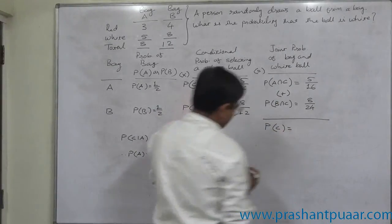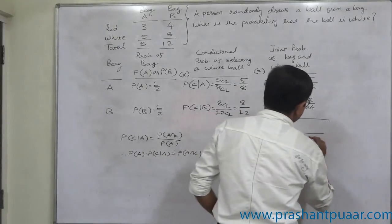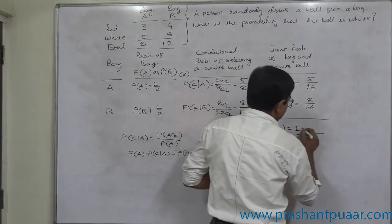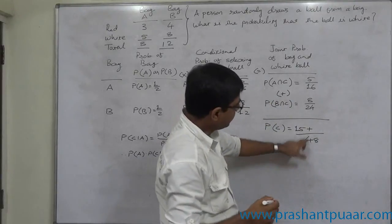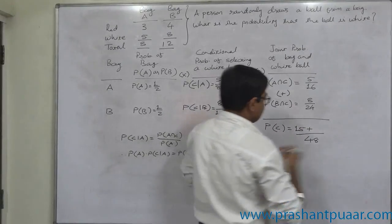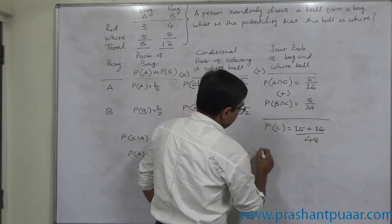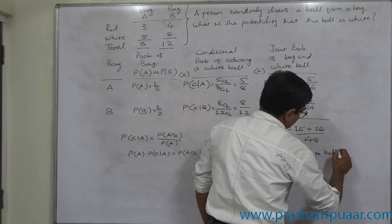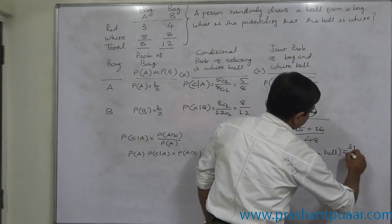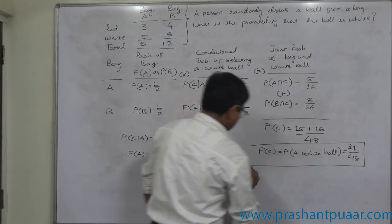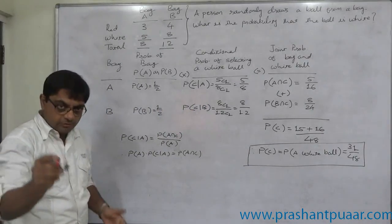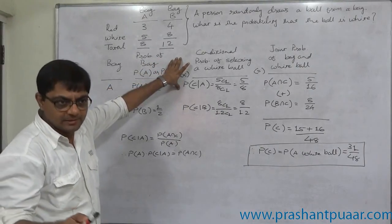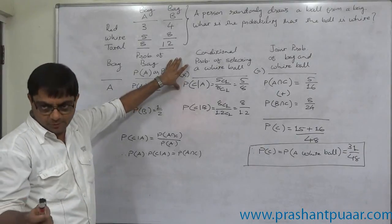P(C) equals 5 by 16 plus 8 by 24. Taking 48 as the LCM: 48 divided by 16 is 3, and 3 into 5 is 15; 48 divided by 24 is 2, and 2 into 8 is 16. So ultimately the probability of selecting a white ball is 15 plus 16 over 48, which equals 31 by 48.